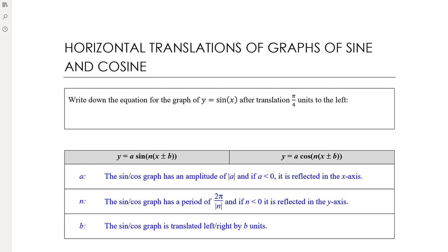When we are only adjusting the period and amplitude there shouldn't be any need to solve an equation to find the x-intercepts, because you should be able to use what you know about the x-intercepts before the dilation and what that means after the dilation. Similarly, if we are only doing a horizontal translation we also should not need to solve any equations. The only time we'll need to solve an equation to find x-intercepts is if we have translated the graph up or down, and not even in all of those situations — we'll talk about that in the next video.